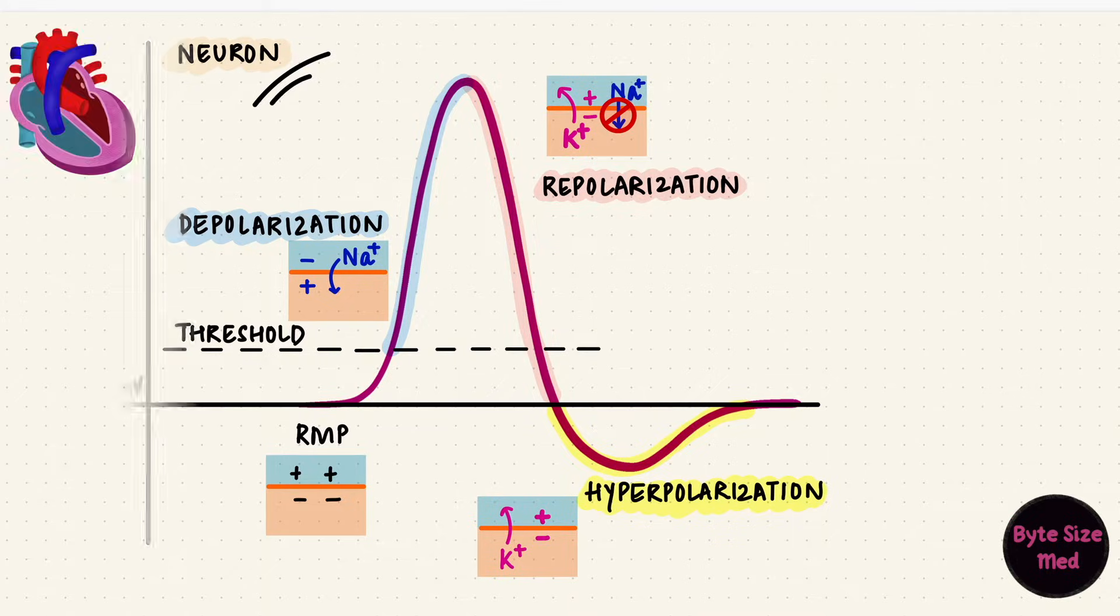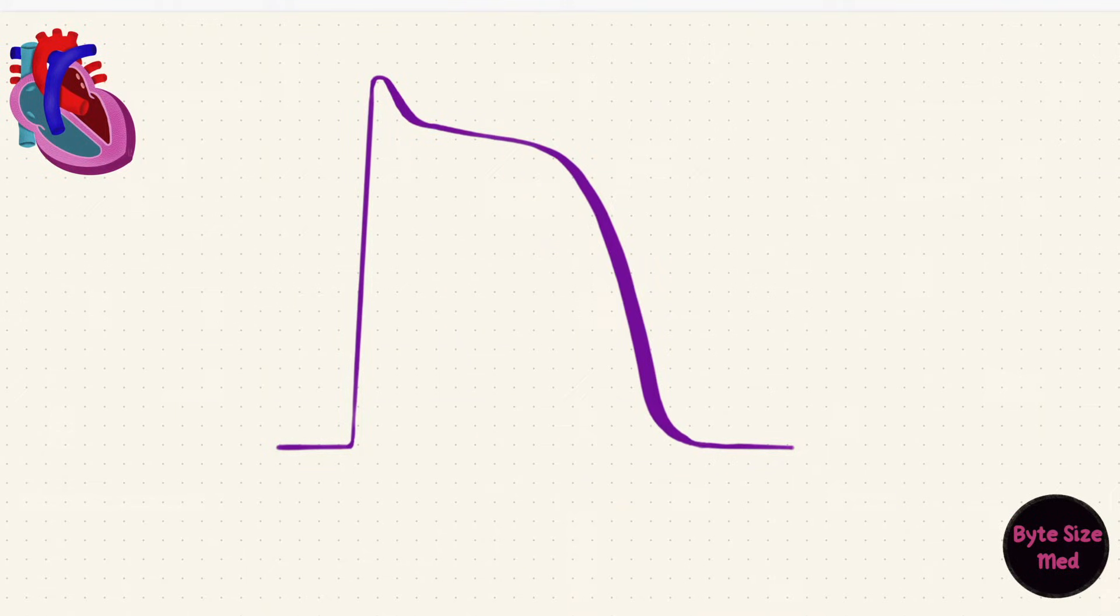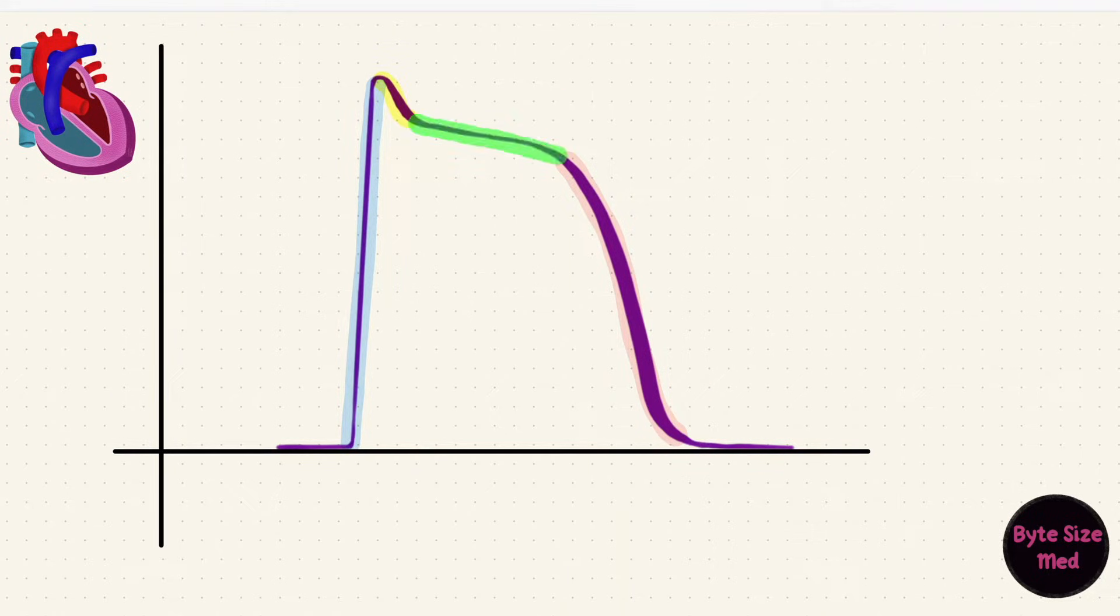That's a neuron's action potential. Now let's see how things are different in the cell of cardiac muscle. Already you can see it looks different. There's an upstroke and a downstroke, but in between there's a notch and a plateau, so the duration of the action potential is obviously longer.